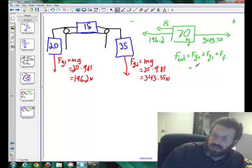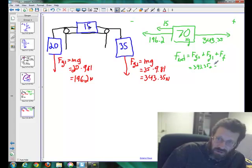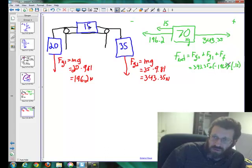So 343.35 plus, it's going to get messy just because I'm out of, oh it's so hard. Minus 196.2 plus minus 15.